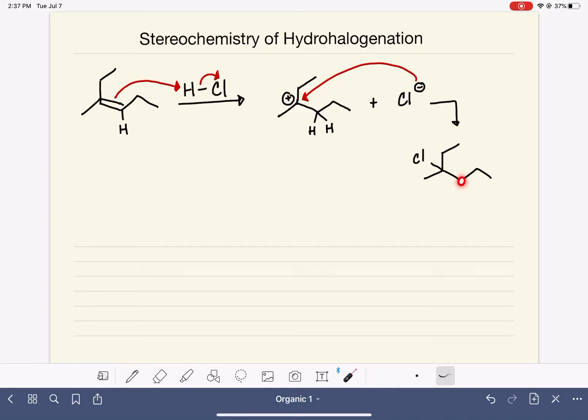When we have finished drawing the product of a hydrohalogenation reaction, we always need to look at the two carbons that we worked with in the reaction and ask ourself if either one of those two carbons became chiral.